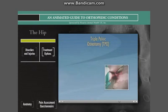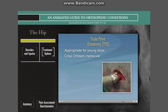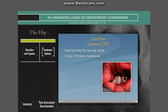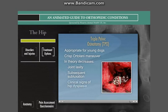Triple pelvic osteotomy, or TPO, is appropriate for young dogs with clinical signs of hip dysplasia but minimal radiographic evidence of osteoarthritis. Further, these dogs should have a crisp Ortolani maneuver. The veterinarian cuts the pubis, ischium, and ilium, and applies a 20, 30, or 40-degree torqued plate to the ileal fragments. The result is an increased dorsal cover of the acetabulum over the head of the femur. In theory, this will decrease the joint laxity, subsequent subluxation, and decrease the clinical signs of hip dysplasia.